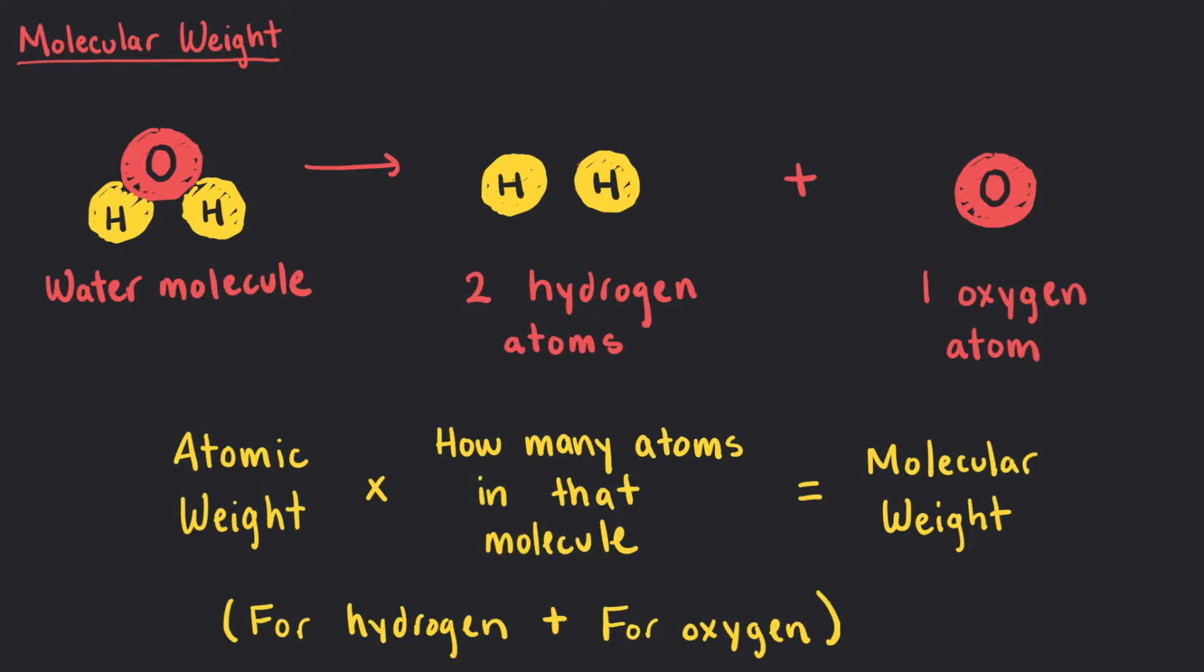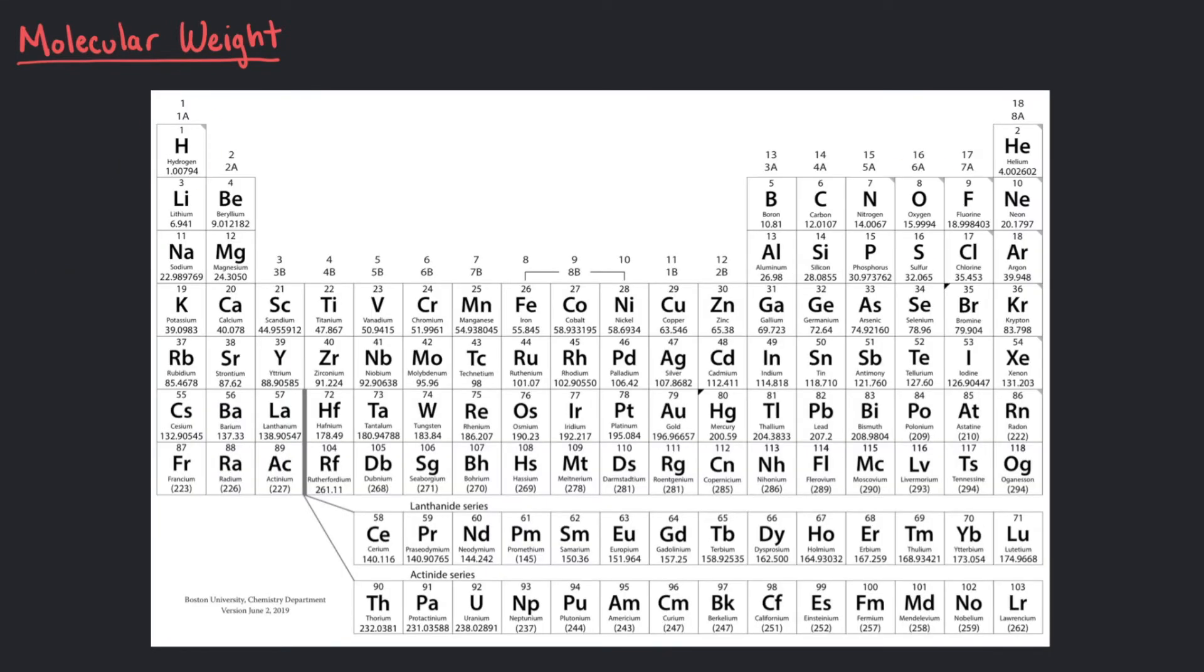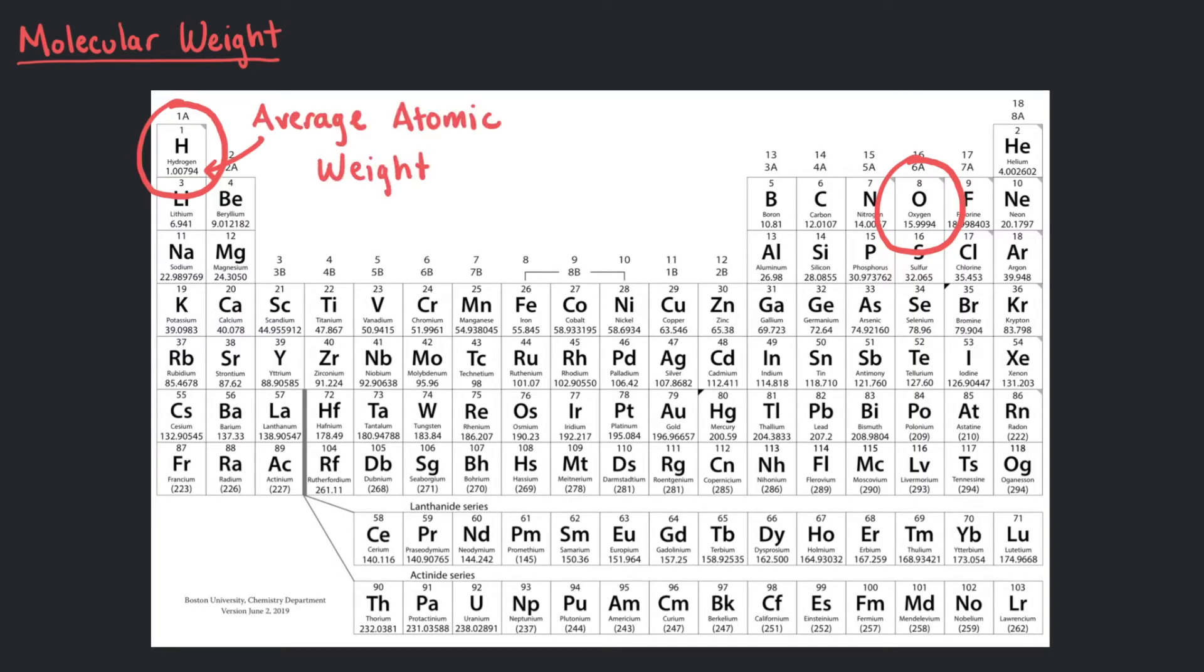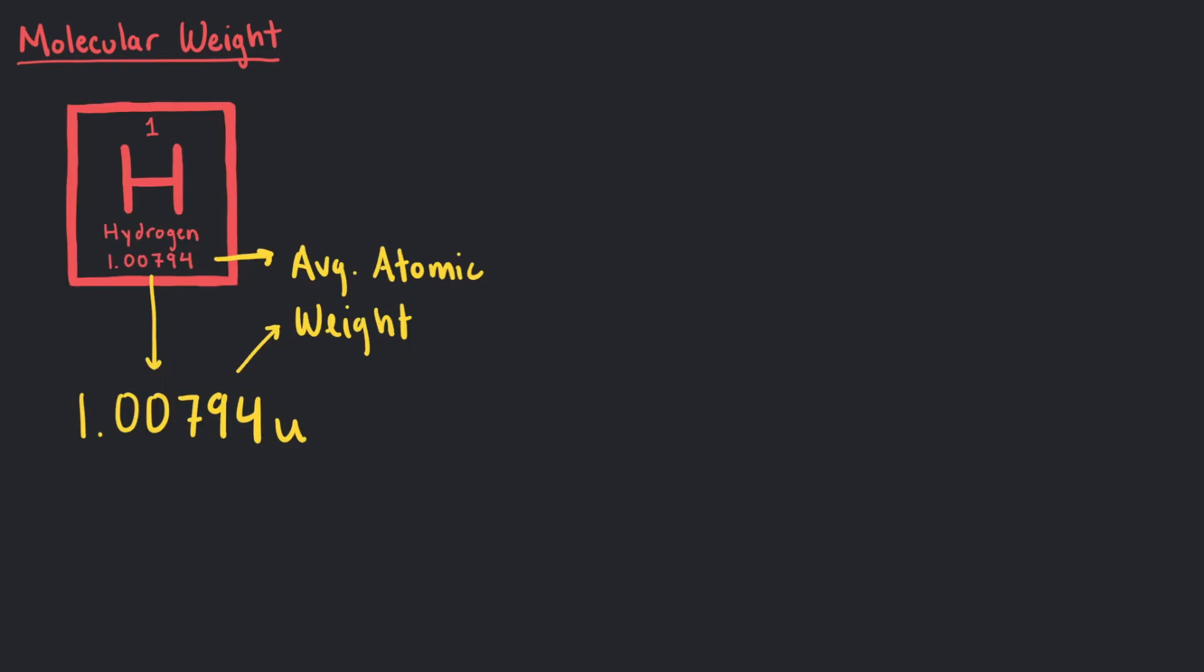Let's find these two elements on the periodic table for a little assistance. The number below the atomic symbol is the average atomic weight. The average atomic weight for hydrogen is 1.00794U.